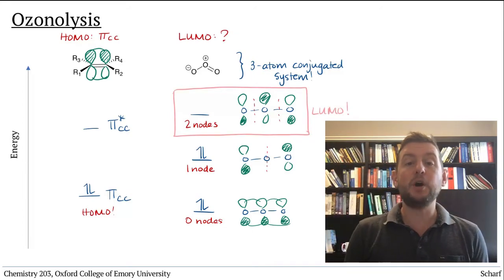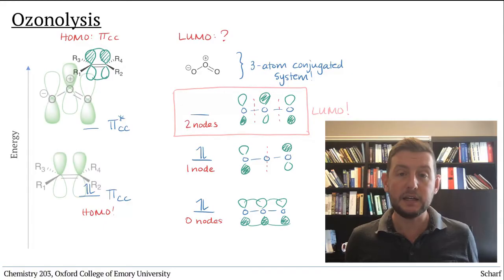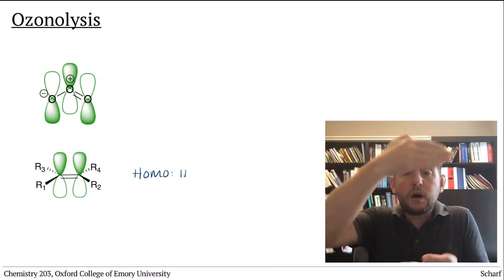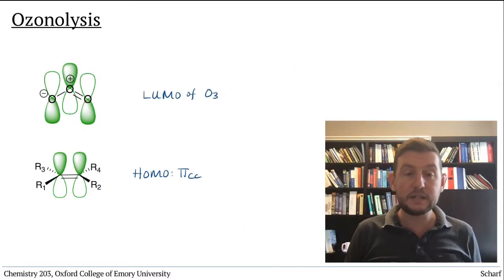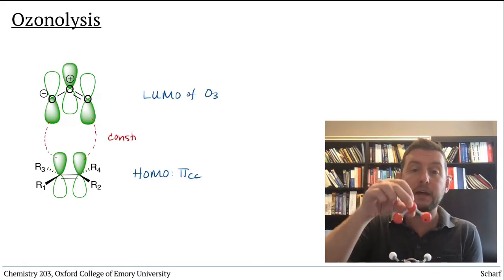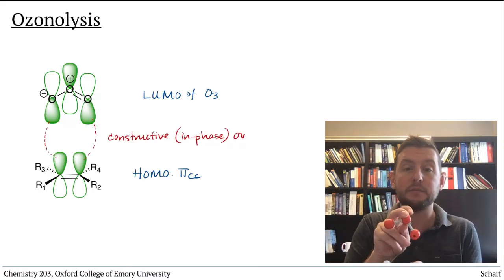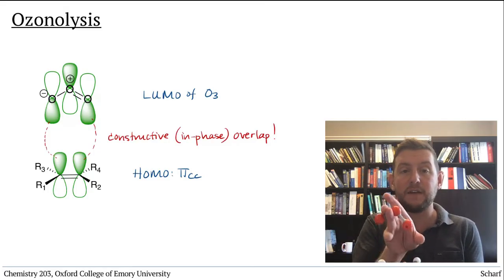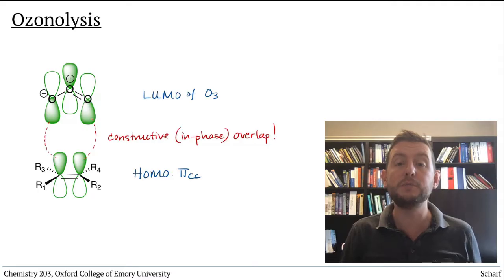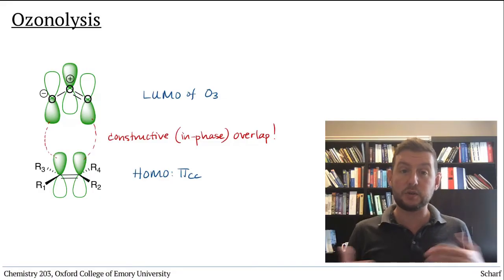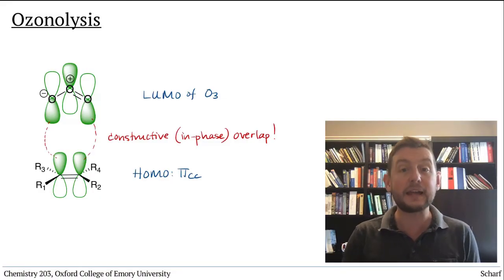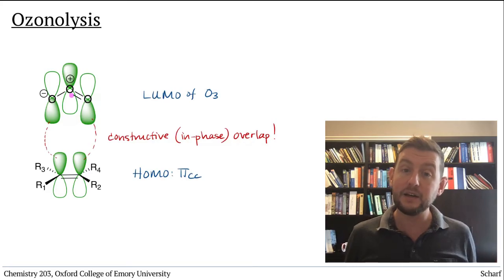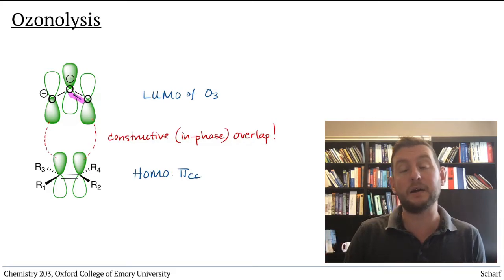If we line up the HOMO of the alkene with the LUMO of ozone, we can see that there's constructive overlap at both of the oxygen atoms at the ends of the ozone molecule, each interacting favorably with the two lobes of pi CC. And because the alkene is donating electrons into ozone's LUMO, and that LUMO is antibonding, we also break the pi bond within ozone.